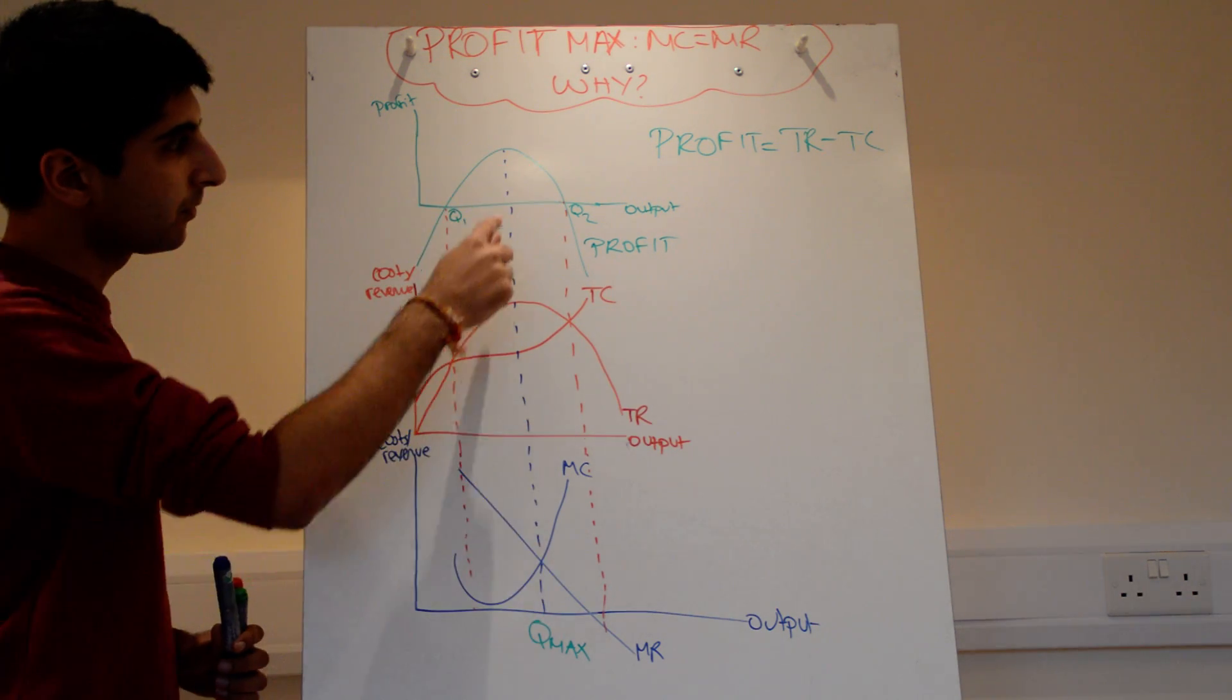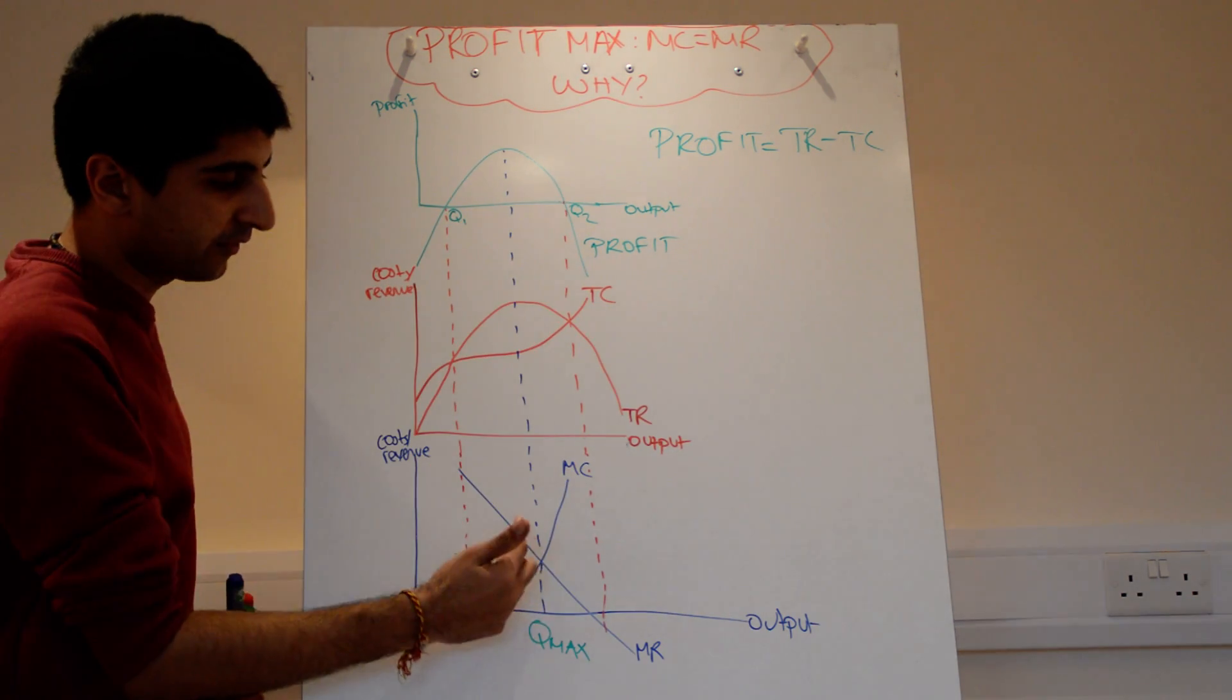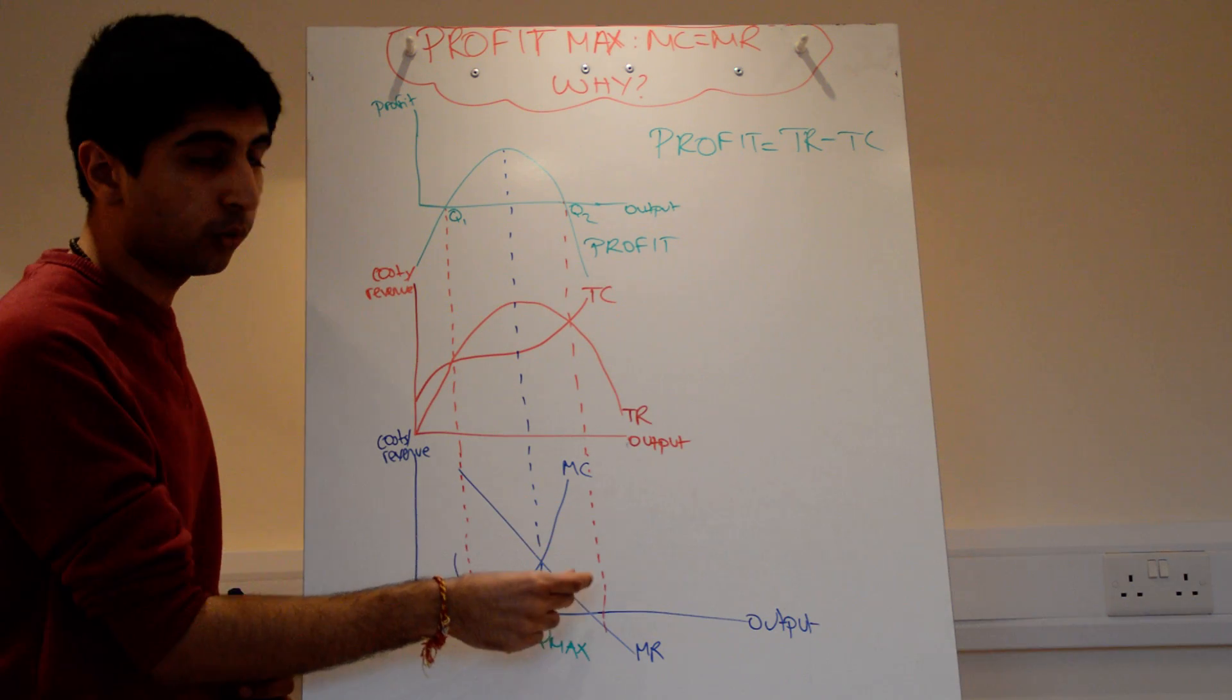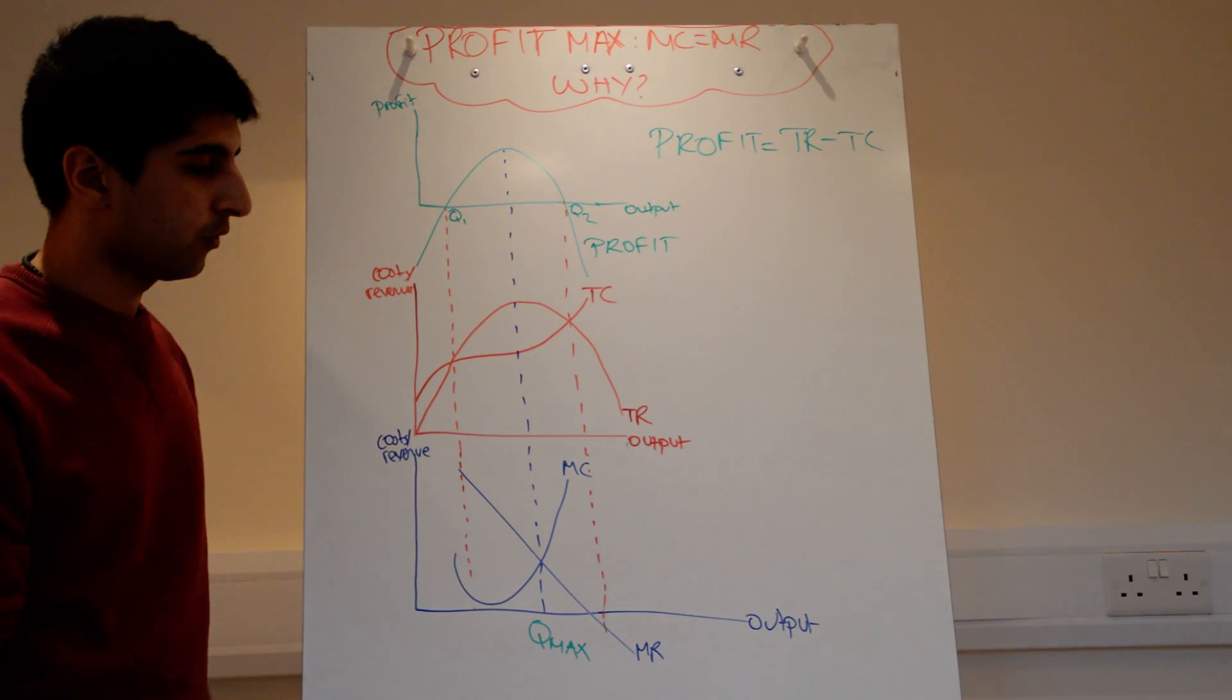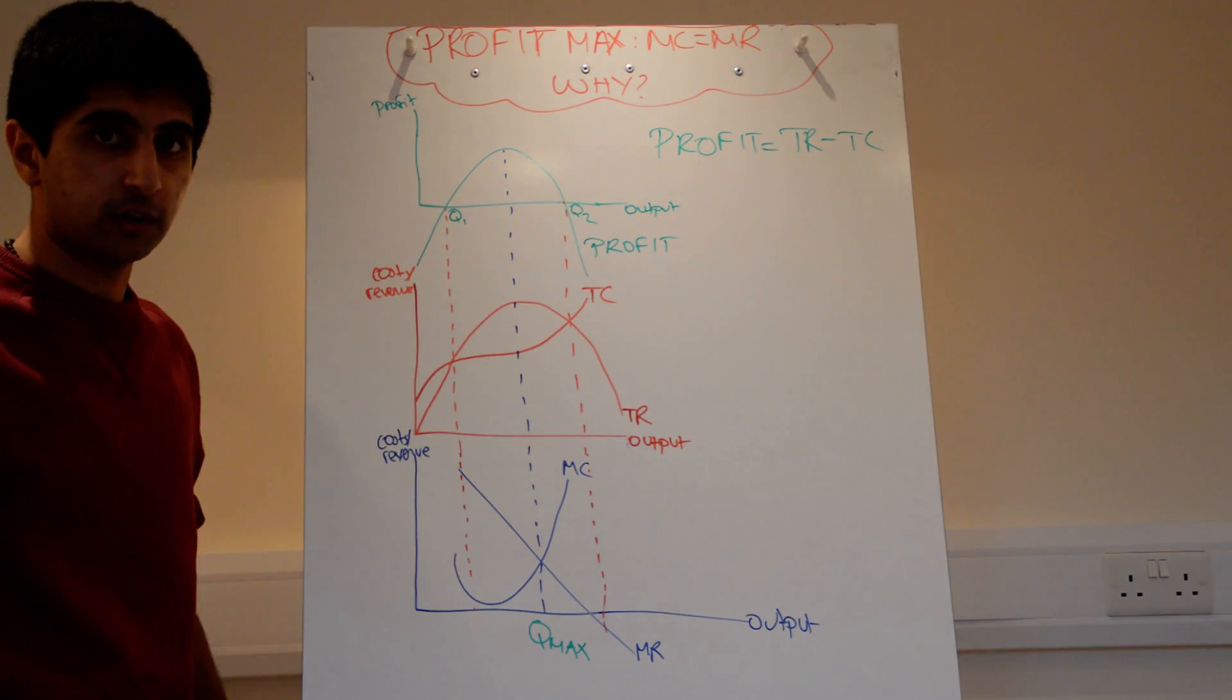Go up to the profit curve here. The profit starts to fall after MC equals MR because it costs more than we actually get in in terms of revenue. Profits naturally will start to fall.